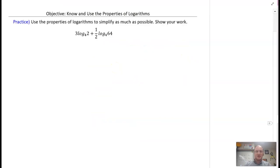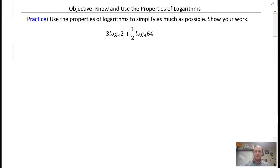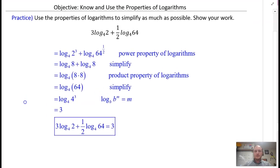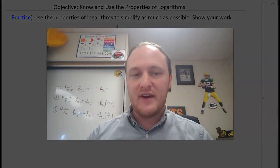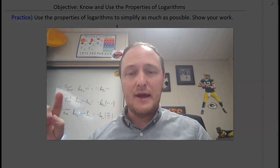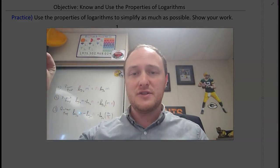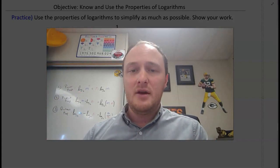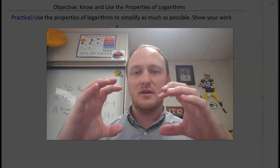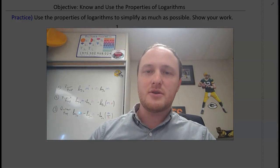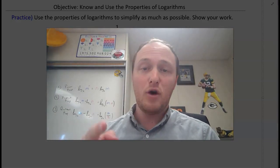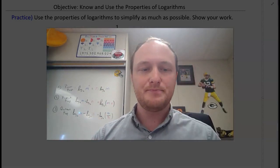Here is the last practice problem — hopefully you paused the video, and here is the solution. I hope what you found is a general pattern: first, utilize the power property to bring up any coefficients into the argument. Then, if you're adding logarithms, put them together into one term by multiplying. If you have to subtract, utilize the quotient property. That is properties of logarithms — hopefully you know them and can use them. Catch you next time. Peace.